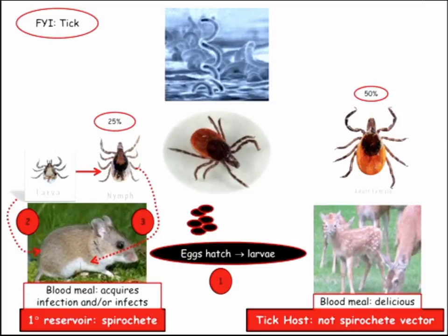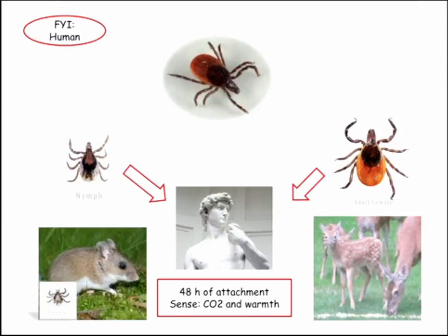The tick then grows up and becomes an adult, and they love deer. Deer are not a vector — they're innocent bystanders; the ticks just love their blood. It's really the tick and the mouse where the infection is harbored. From the human point of view, the infected nymph or infected adult then bites us. It's got to be attached for a couple of days to transmit infection, and it finds us by CO2 and warmth.